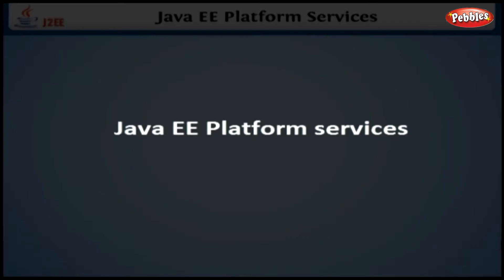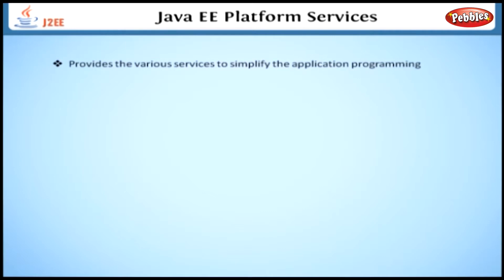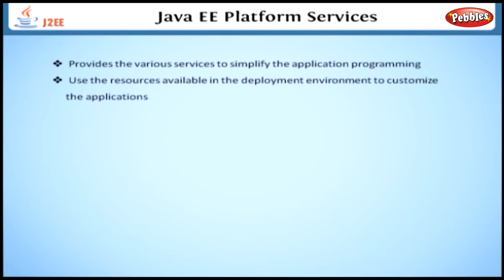Java EE platform services. So far, we have discussed the various application scenarios of Java EE and the application servers. Here, we will discuss a few things about the platform services. Java EE platform provides various services to simplify application programming. It also makes use of the resources available in the deployment environment to customize applications at deployment time.